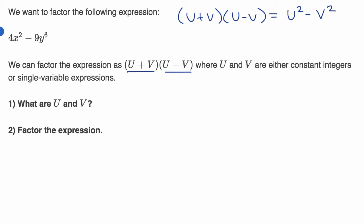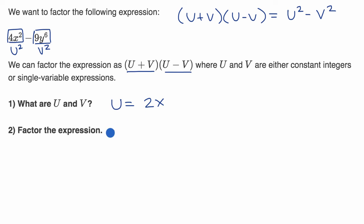Does this fit this pattern? In order for the first term to be u squared and the second to be v squared: u squared equals four x squared, so u would have to be equal to the square root of that, which is two x. Notice two x squared is four x squared. Then v would have to equal the square root of nine y to the sixth — the square root of nine is three, and the square root of y to the sixth is y to the third power.